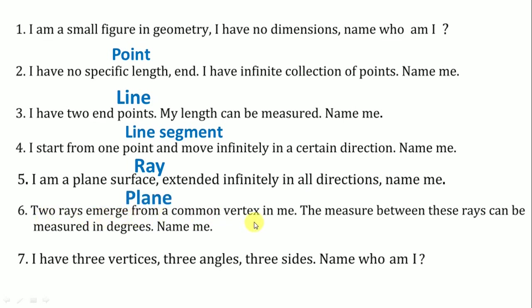Two rays emerge from a common vertex in me. The measure between these rays can be measured in degrees. Two rays meet on end point means it is angle.